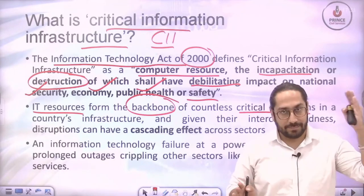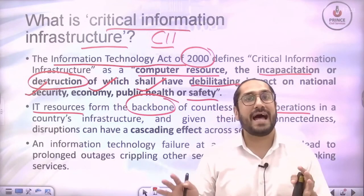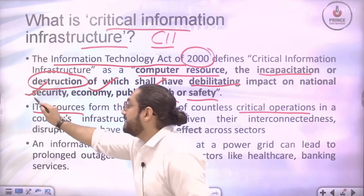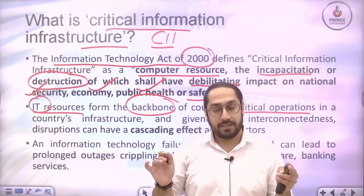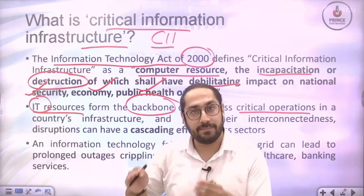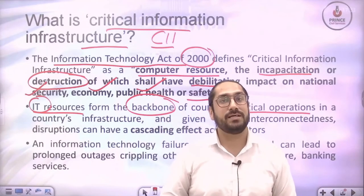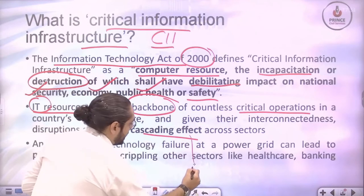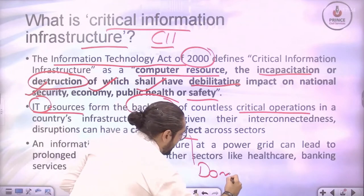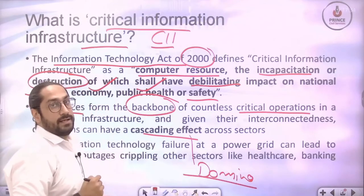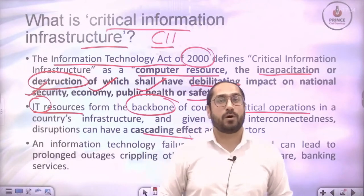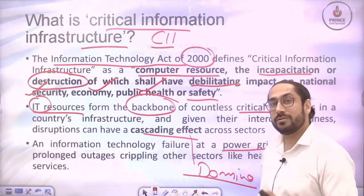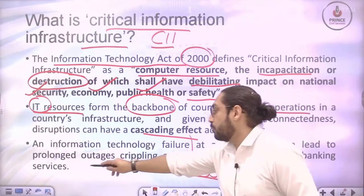For example, take a critical infrastructure like a power plant. In the past, power plants were not heavily dependent on IT or computers, but nowadays they are. If the IT systems fail, it will take down the entire power structure with it, creating a cascading or domino effect. For instance, a failure of the power grid can cause large outages affecting healthcare, banking, and so on.